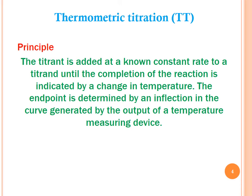Let's go through the principle of TT. The titrant is added at a known constant rate to the titrand until the completion of the reaction, which is indicated by a change in temperature. The endpoint is determined by an inflection in the curve generated by the output of the temperature-measuring device.